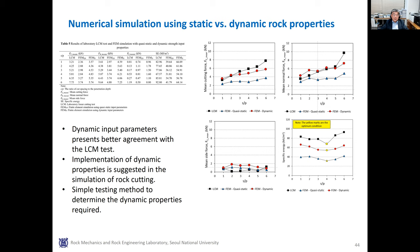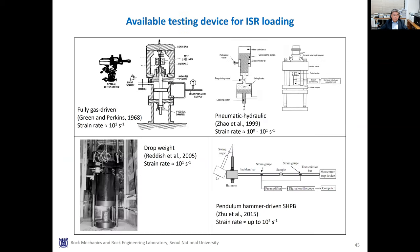To overcome the difficulties in obtaining intermediate strain rate dynamic properties of rock, a simple testing method was considered. Typical testing methods at dynamic loading conditions include a gas-driven loading system, pneumatic-hydraulic loading system, drop weight test, and pendulum hammer-driven Split Hopkinson pressure bar. Each method may provide different strain rates, but all in the range of intermediate strain rate. For simple procedure and easy repeatability, the drop weight test can be considered.